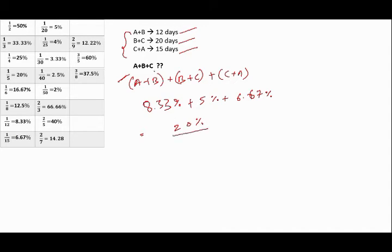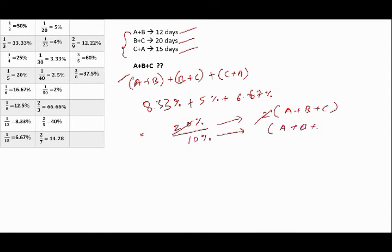So 2(A+B+C) = 20%, which means A+B+C = 10% of work per day. Following the same ritual: 10% corresponds to the value of 1/10, which means 10 days is your answer for all three together. When you try the LCM method it takes almost 10 seconds, and same goes with the fraction method. But when you take the percentage method, you can easily solve it within 3 to 5 seconds. That margin difference of 5 seconds really makes a difference.